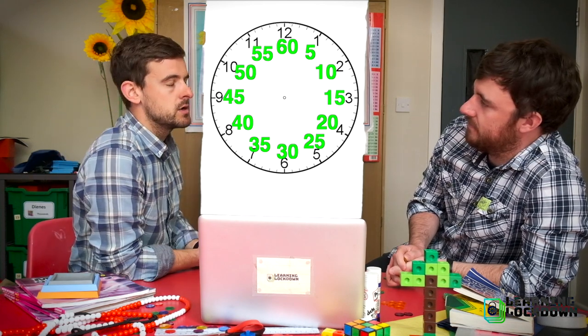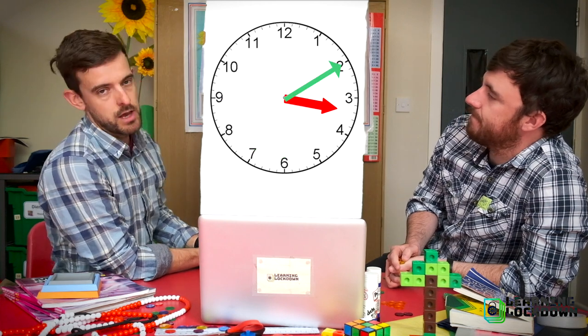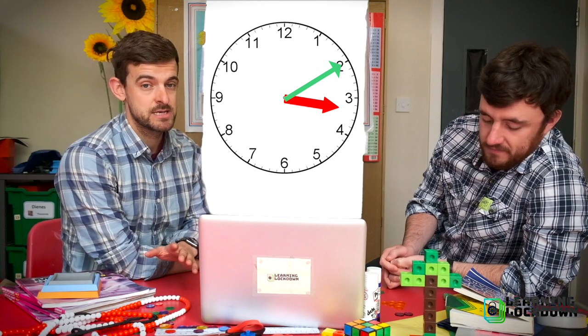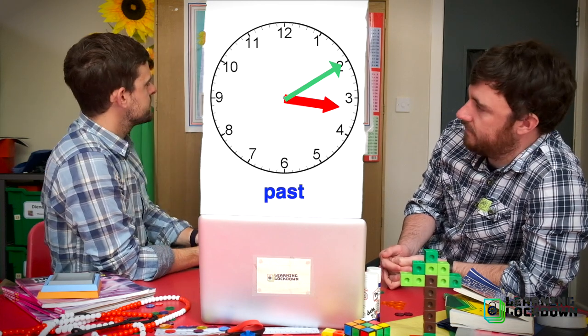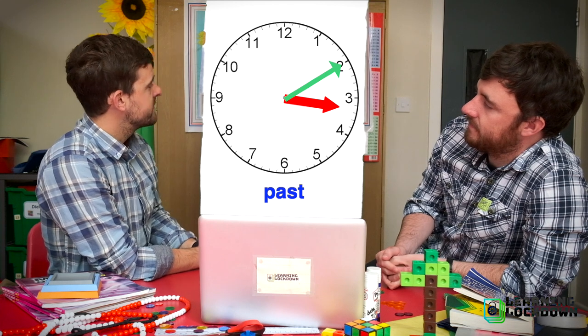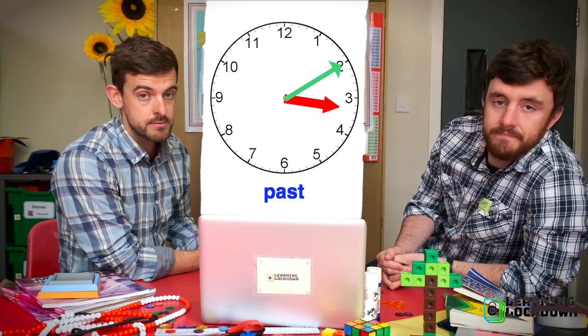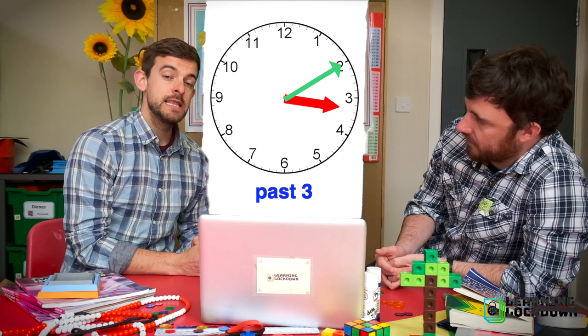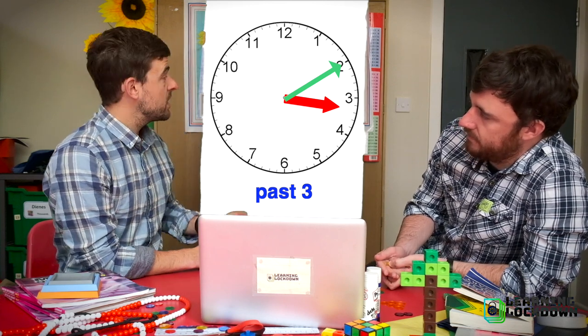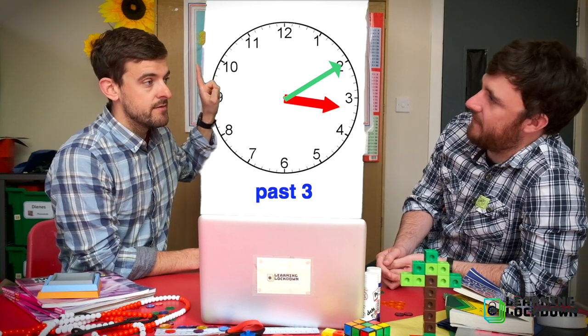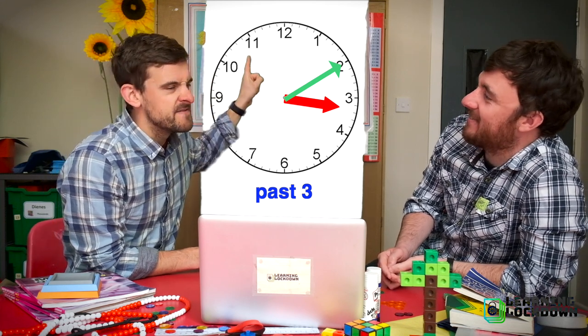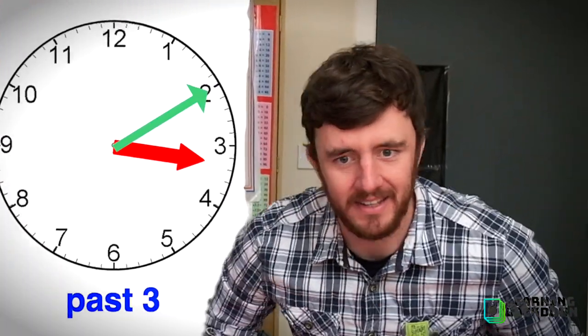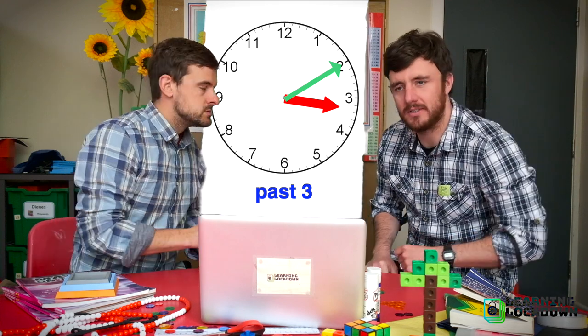Let's place our clock in a position that we could recognize. Let's use our skills from Monday. Are we past or to? Well we're past an hour, so let's place that on the board. Which hour have we just passed? Well we've just passed three. Okay, so we're past three. Now let's travel in a clockwise direction starting at zero. That's very important because everybody forgets that and they start at five and they get it wrong.